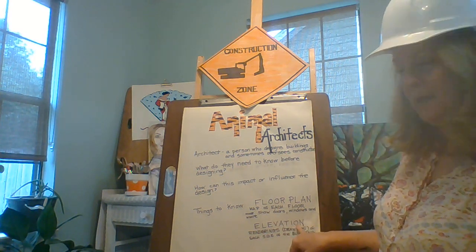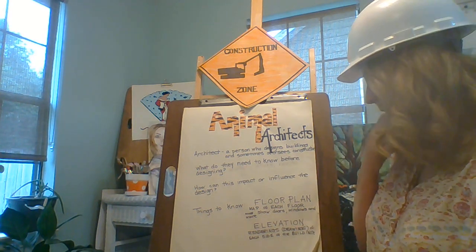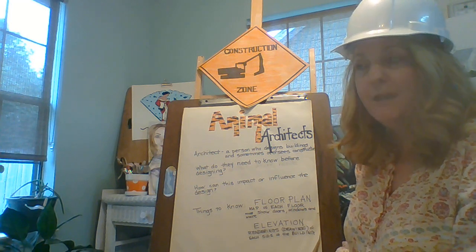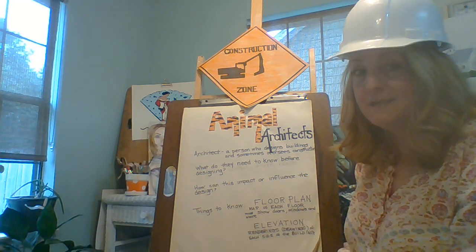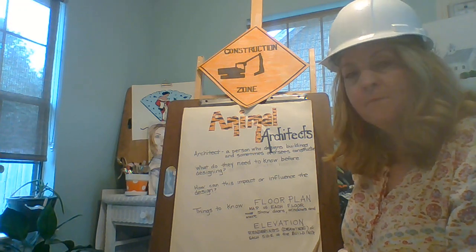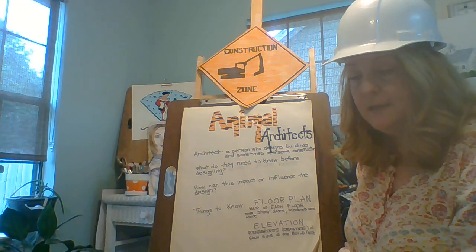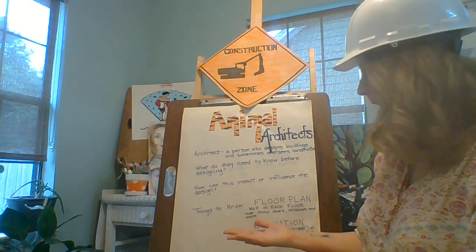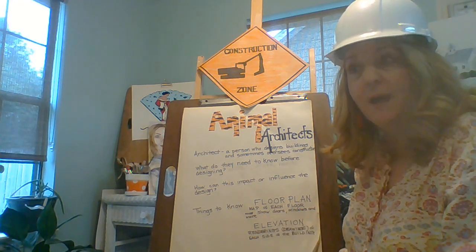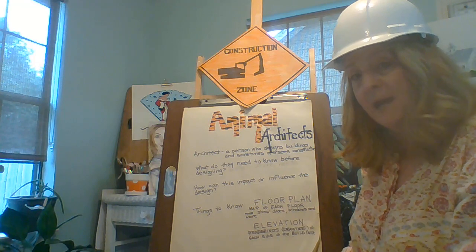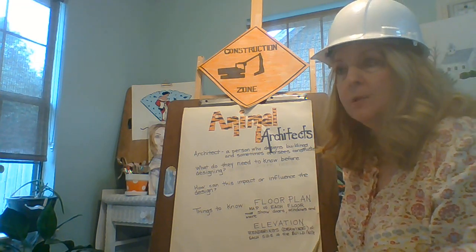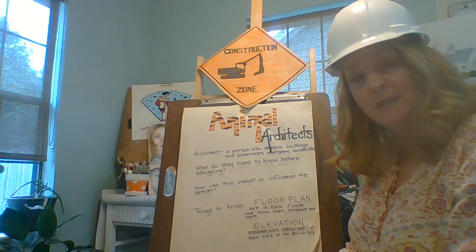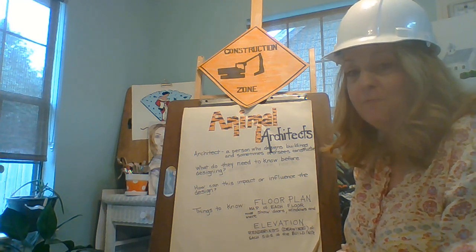Elevation is the other word. Elevation is just a fancy word for renderings — drawings of the exterior. Exterior means outside, interior means inside. We're going to focus on the front elevation today, which is the front of the house. But in true plans for a home, there's going to be an elevation for each side — front, back, and all the sides. You older students might be creative enough to show each floor and each end of the building.